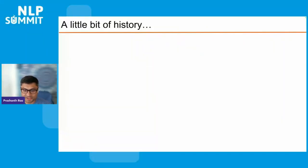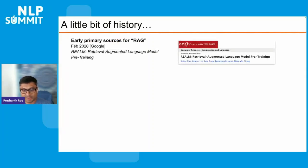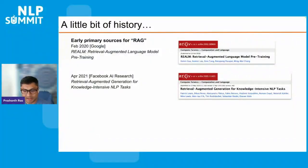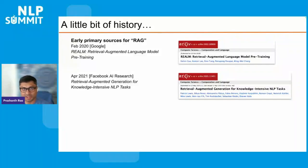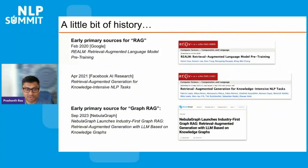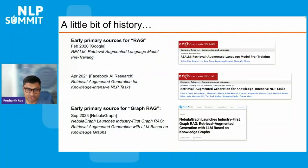In the early days, looking at the primary sources that document the term RAG, we can look at two papers: the first one by Google and another by Facebook AI Research. The latter was titled 'Retrieval Augmented Generation for Knowledge Intensive NLP Tasks,' and this paper can be thought of as the one that coined the term RAG. The early primary source for GraphRAG can be traced back to around September 2023 by the folks at NebulaGraph, a graph database company, who published a blog post discussing their industry-first GraphRAG solution.